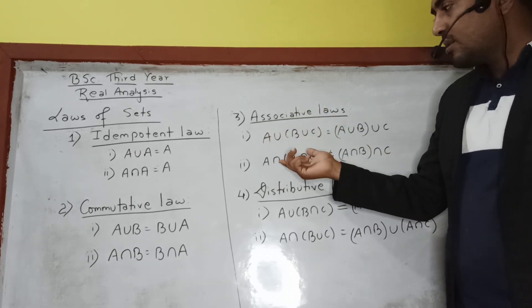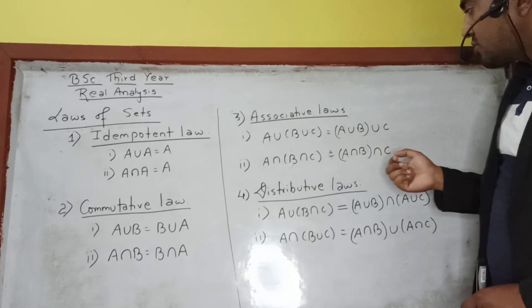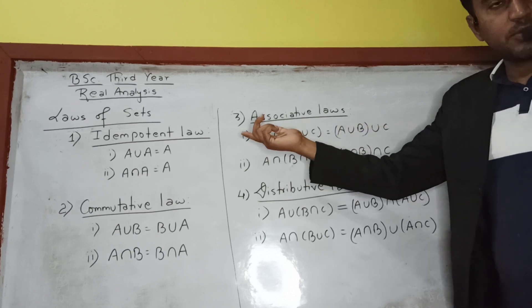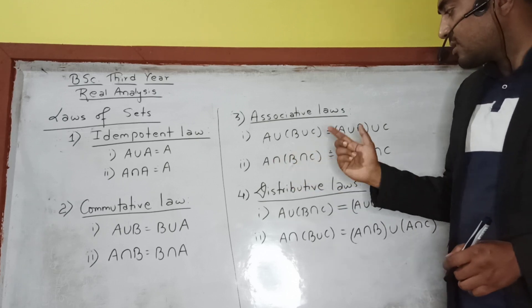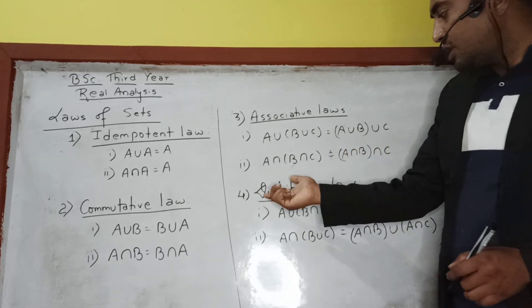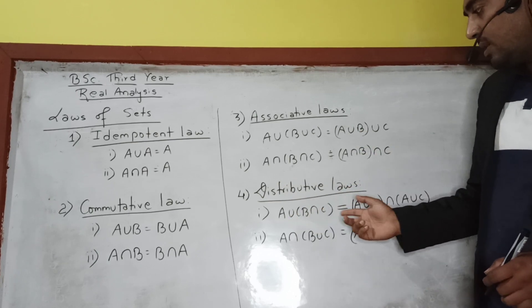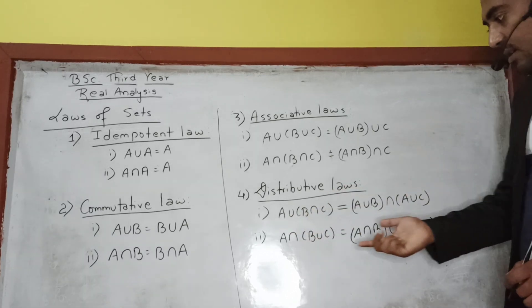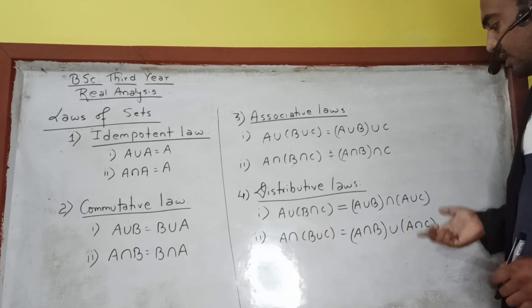Distributive law: A ∪ (B ∩ C) = (A ∪ B) ∩ (A ∪ C), and A ∩ (B ∪ C) = (A ∩ B) ∪ (A ∩ C).